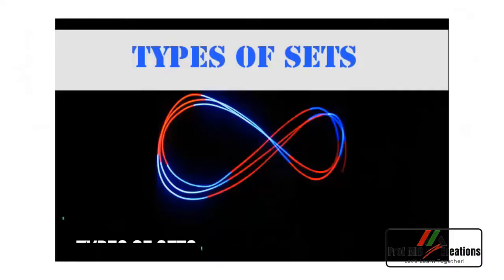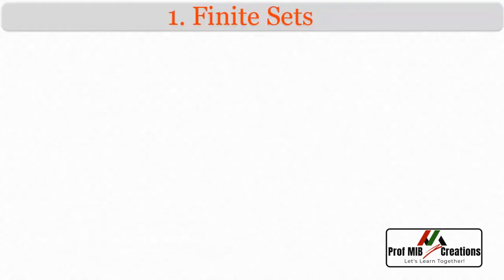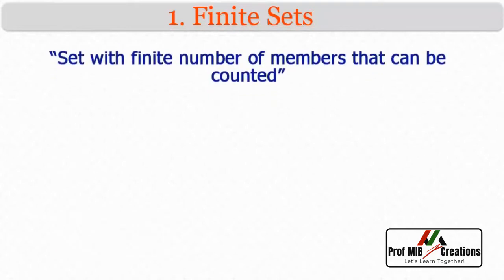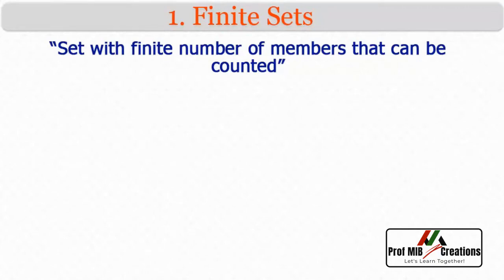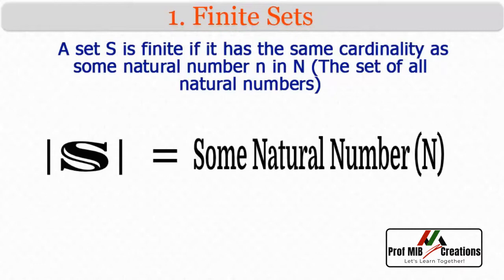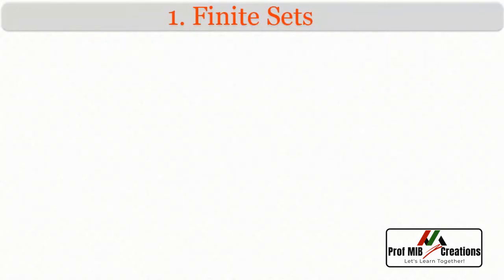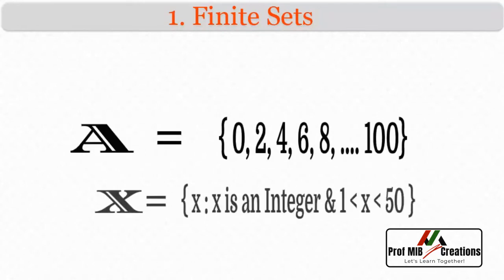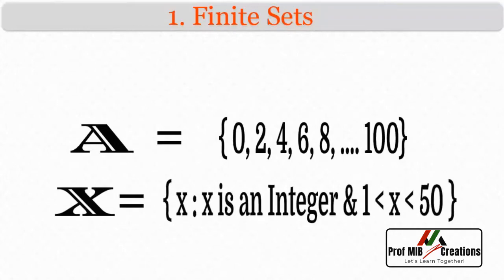Let us now cover some types of sets. The first type is finite set. As the name suggests, a finite set is a set that has a finite number of elements that can be counted. More formally, a set S is finite if it has the same cardinality as some natural number N. We can define cardinality of set S equal to N and say that S has N elements. Examples are a finite set A, or a finite set C equal to {x such that x is an integer and 1 < x < 50}. These two sets have finite numbers of elements.